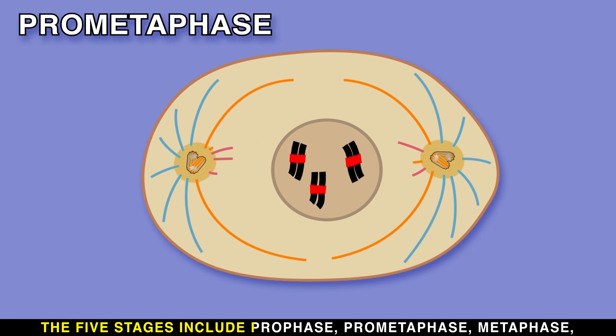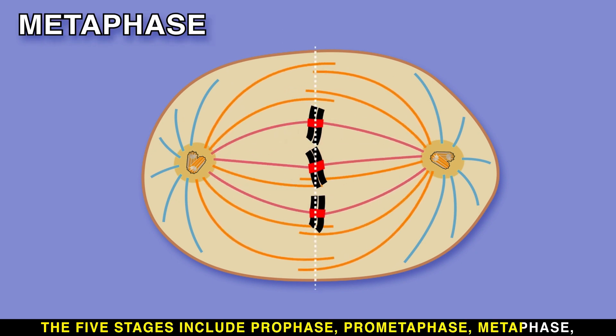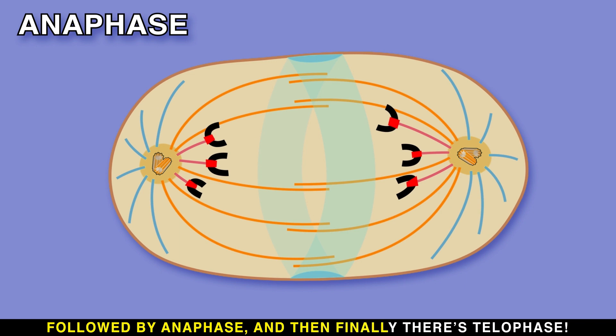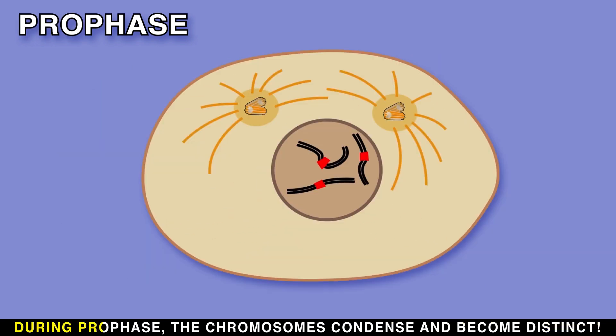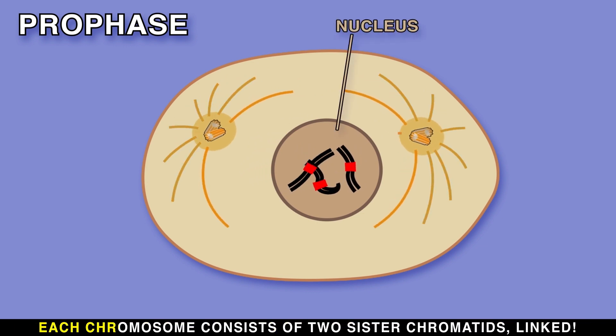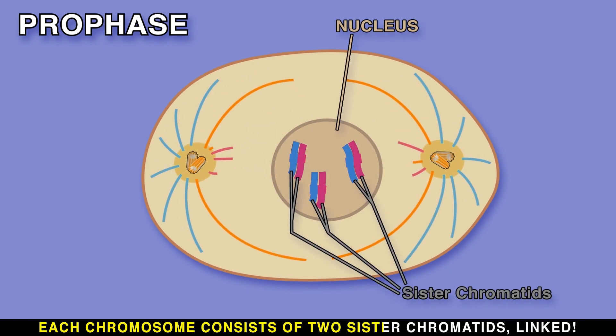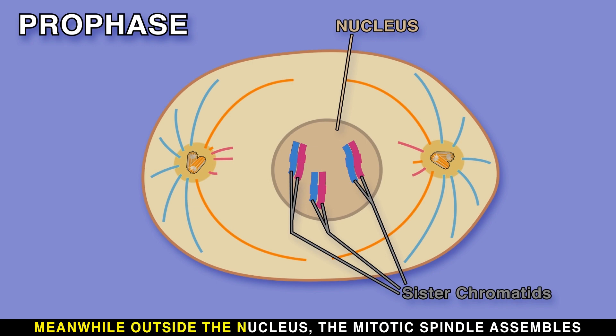The five stages include prophase, prometaphase, metaphase, followed by anaphase, and then finally telophase. During prophase, the chromosomes condense and become distinct. Each chromosome consists of two sister chromatids linked. Meanwhile, outside the nucleus, the mitotic spindle assembles.